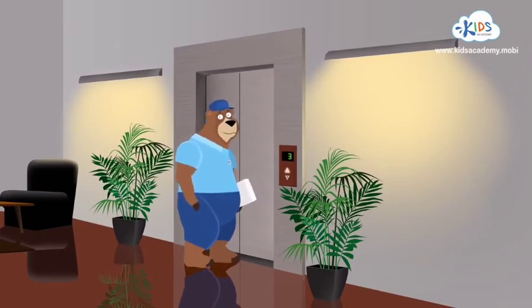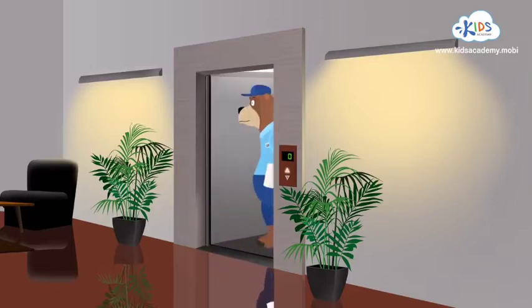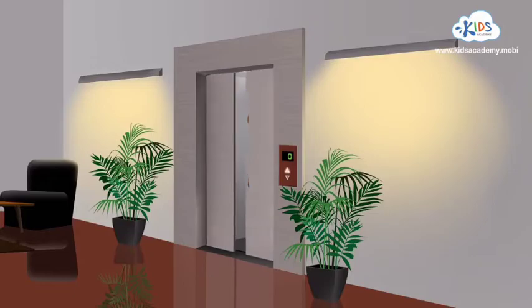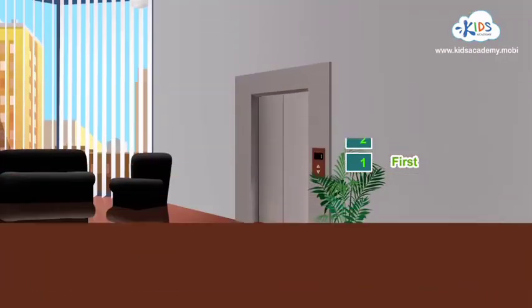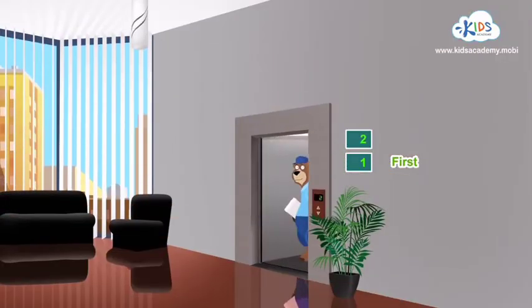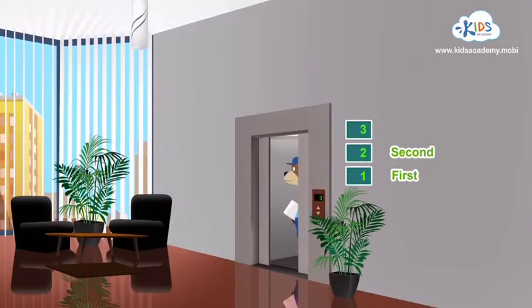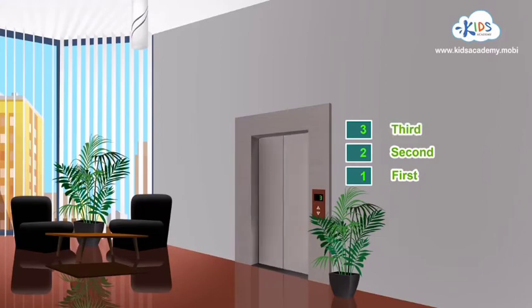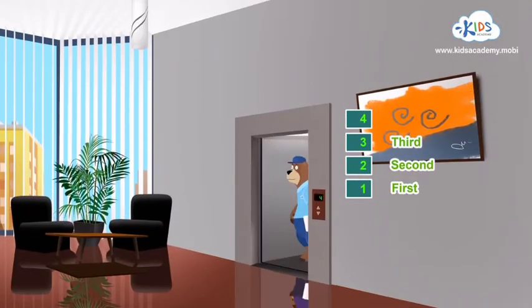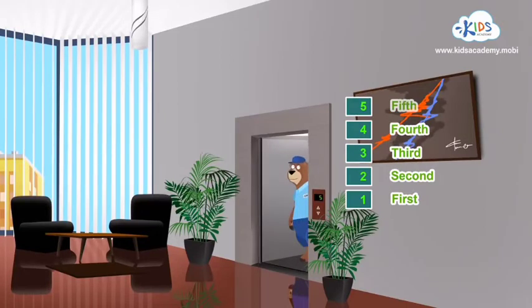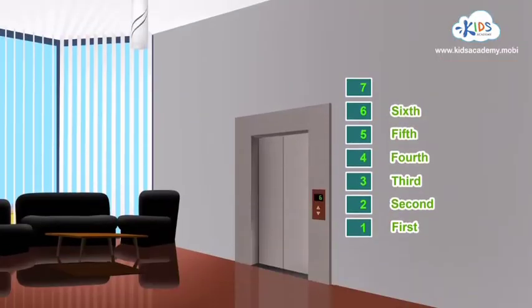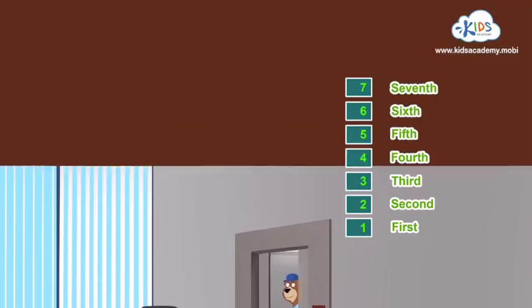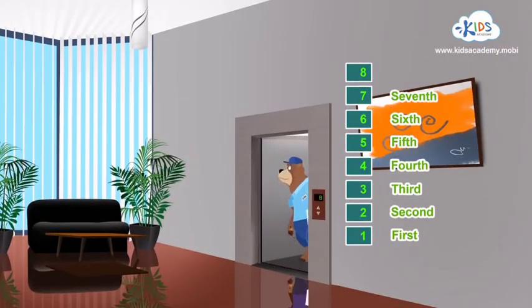We have to go from the first floor all the way up to the 20th floor. Help me count the floors as I go up so that I won't miss the right one. One — we are on the first floor. Two — now we are on the second floor. Three — it's the third floor. Four — which floor is that? Right, it's the fourth. Five — the fifth.